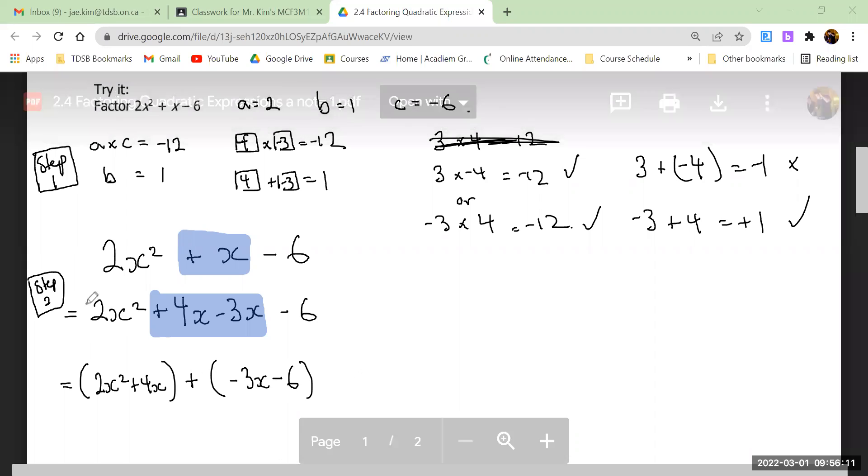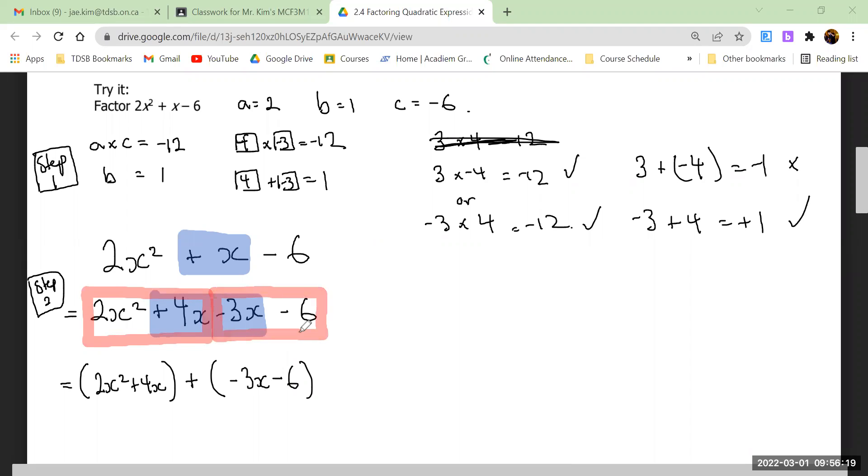Step three: from here, I want you to put the first two numbers in brackets, the last two numbers in brackets, and separate with a plus. So this becomes (2x² + 4x) + (-3x - 6).